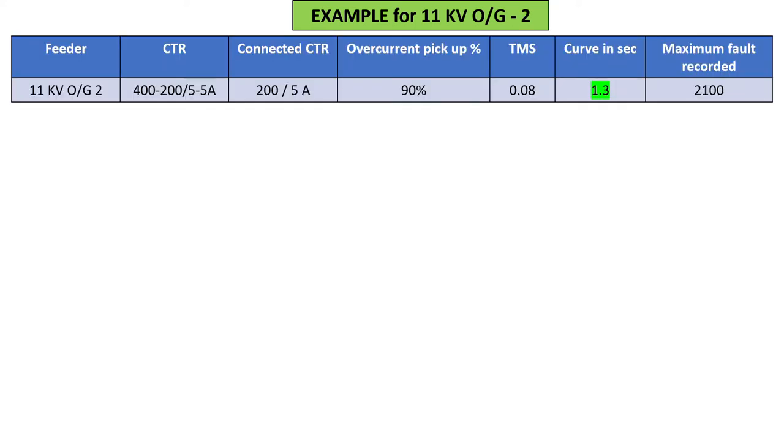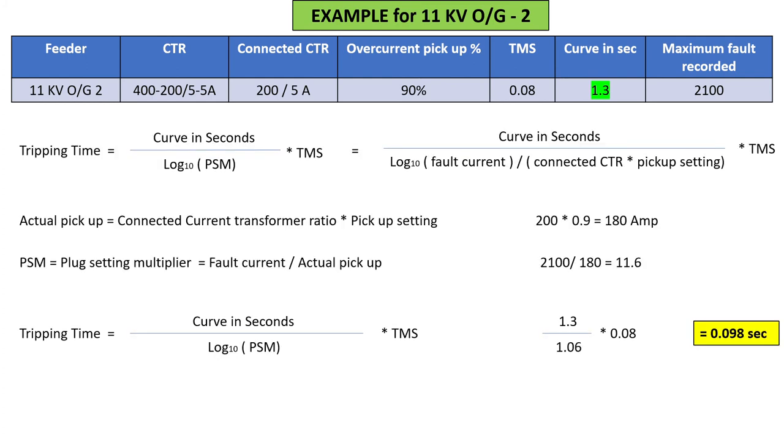Same for 11 kV outgoing feeder two. Here you can see the curve selector is different - you can select yours as per your site requirement. So tripping time here, using the same formula, comes out to be 0.098 seconds.